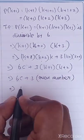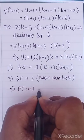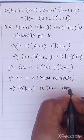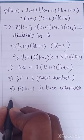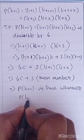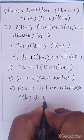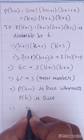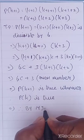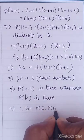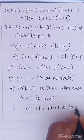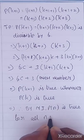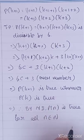Therefore we can conclude that P of K plus 1 is true whenever P of K is true. What is the last step you have to conclude? Therefore by mathematical induction, P of N is true for all N in the natural numbers. So write mathematical induction fully.